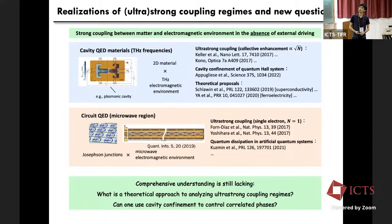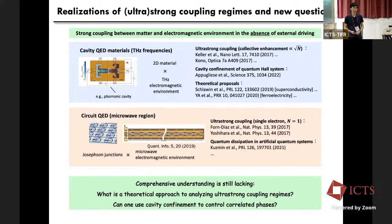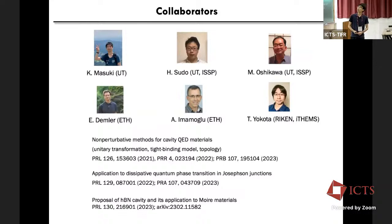These interesting experimental developments motivate a number of theoretical proposals. The ultrastrong coupling has also been achieved in the microwave region, for example in circuit QED, where a system like a data Josephson junction is coupled to a microwave electromagnetic environment. Despite these developments, a comprehensive understanding of this type of cavity QED material is still lacking. Important open questions include: what is the theoretical approach for analyzing ultrastrong coupling regimes, and can we use cavity confinement to control correlated phases? The main goal of this talk is to address these questions.